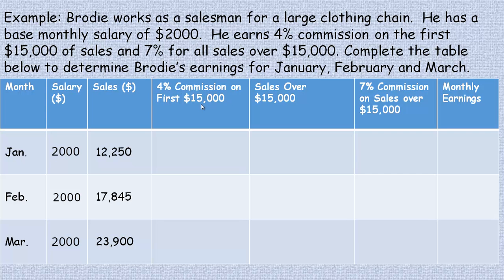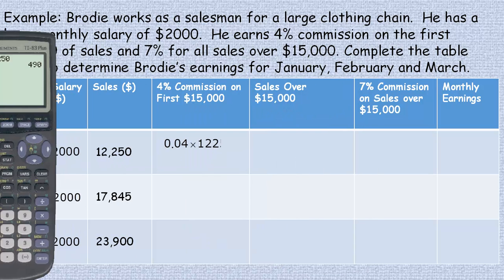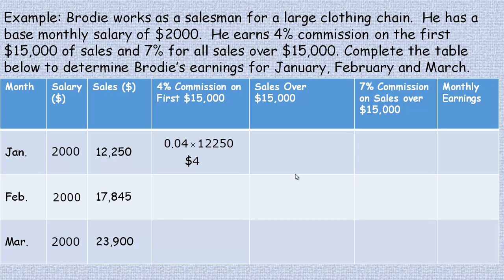He gets four percent commission on the first fifteen thousand dollars in sales. In January he doesn't quite make it to fifteen thousand, so we multiply four percent, which is 0.04, by twelve thousand two hundred fifty dollars. That gives four hundred ninety dollars commission for that month. He has no sales over fifteen thousand because he only sold twelve thousand two fifty, so four hundred ninety dollars is his commission.